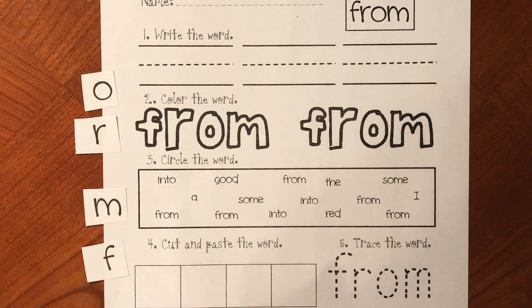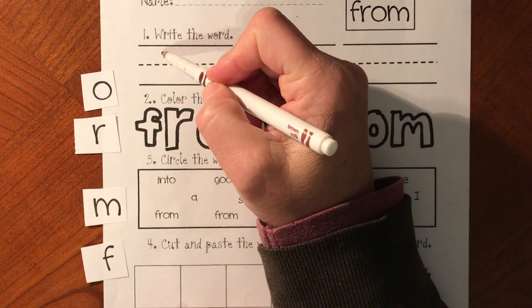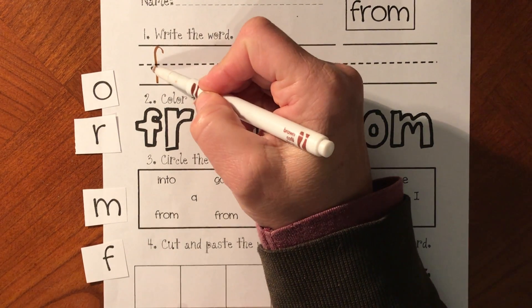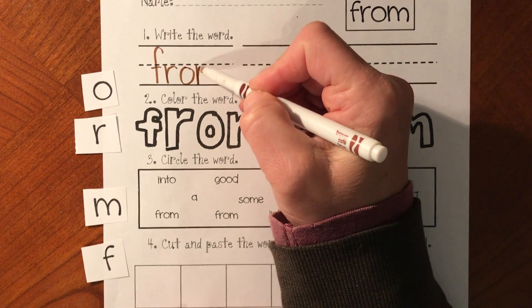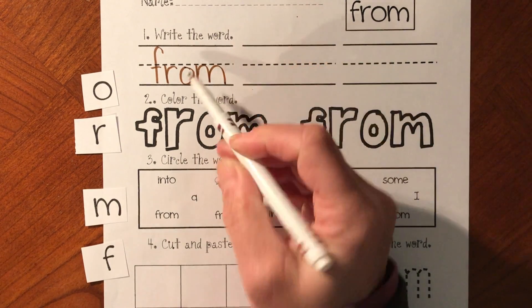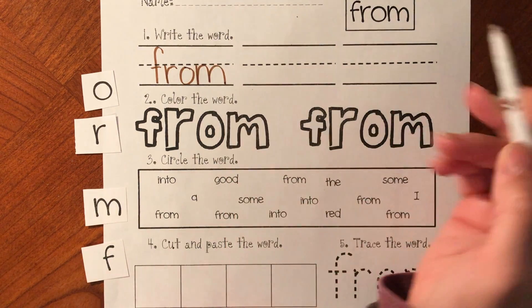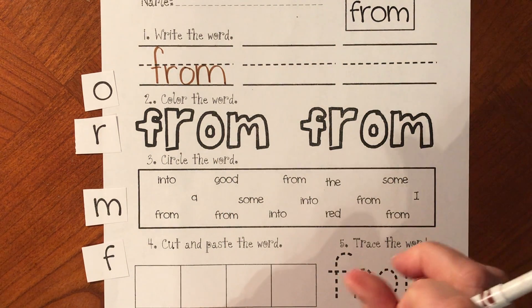So we're going to practice writing the word from. From is F-R-O-M. From. I didn't do a good job making my letters touch the middle line. I'm sorry. I'll try better this time.